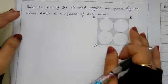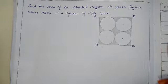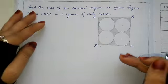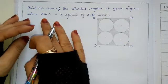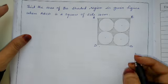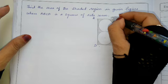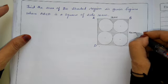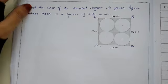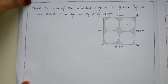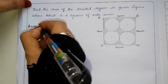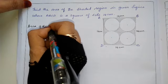Now the next very important and frequently repeated question. Find the area of the shaded region in the given figure where ABCD is a square of side 14 cm. In a square all 4 sides are equal. This is a very easy problem.